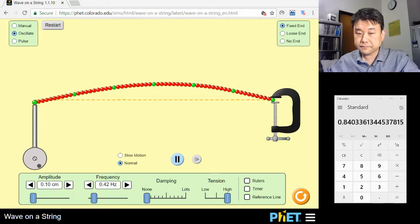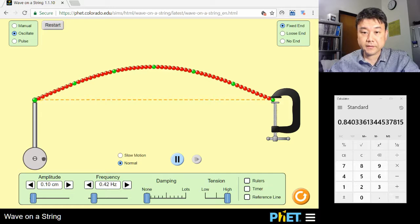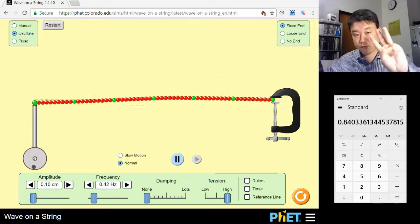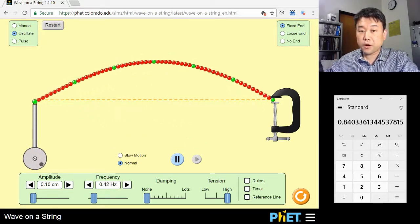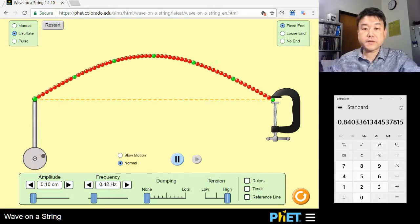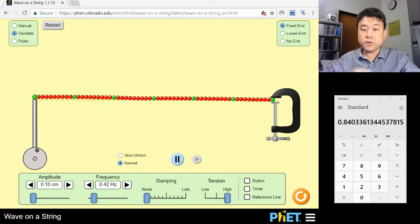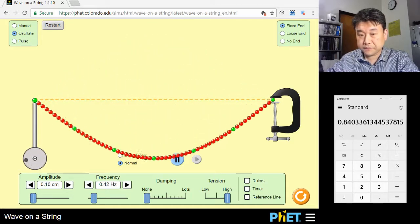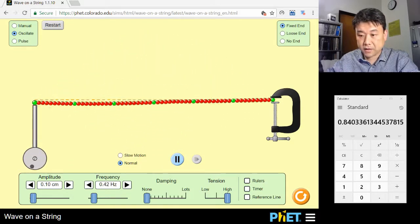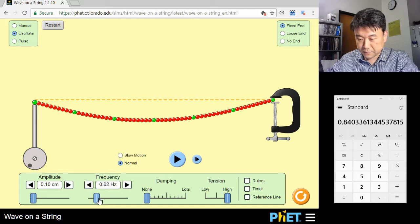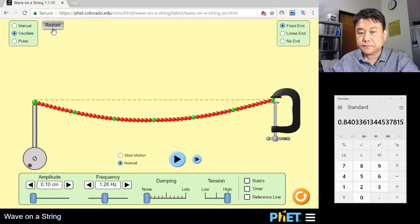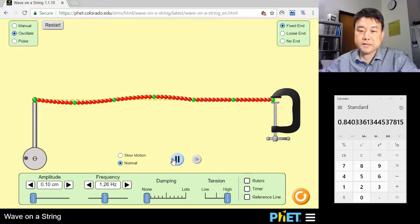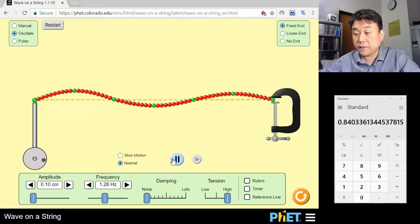All right, that worked out as expected. Now, you can have frequency three times this, or wavelength a third of this, and still end up with nodes at both ends. You will have two extra nodes in the middle. And at this higher frequency, 1.26. This is the shape of the standing wave you get.